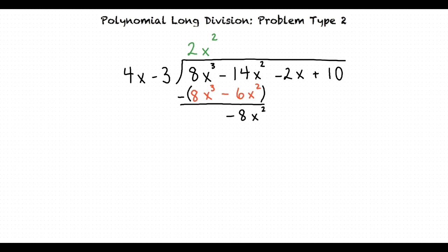Negative 14x squared minus 6x squared seems like it would equal negative 20x squared. Why is the result negative 8x squared? Great question.